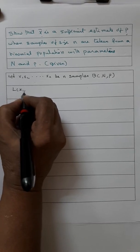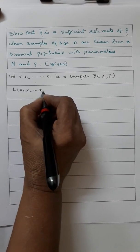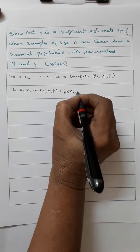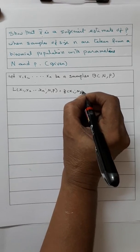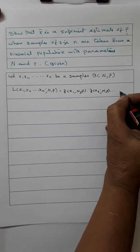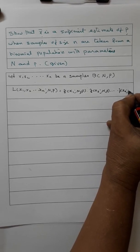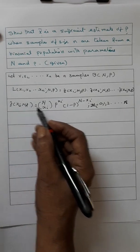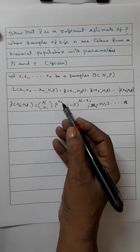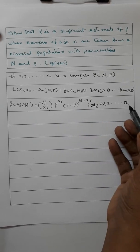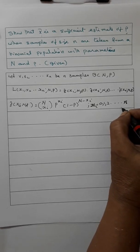The likelihood function equals f(x1, p) · f(x2, p) · ... · f(xn, p), where f(xi, p) = C(n, xi) · p^xi · (1-p)^(n-xi), and xi takes values 0, 1, 2, 3, ..., n, with i varying from 1 to n.